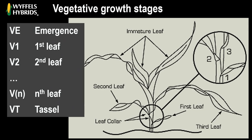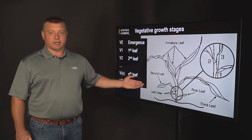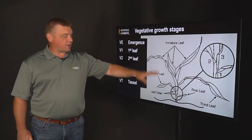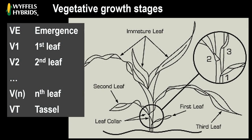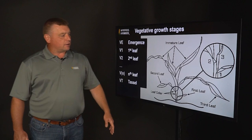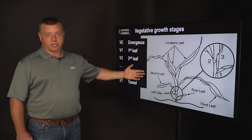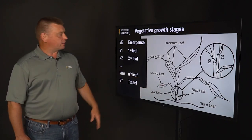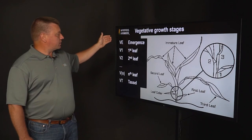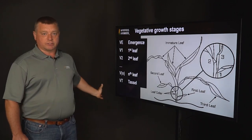The first stage or part of a corn plant's life cycle is called the vegetative stage. The vegetative stage is denoted by leaf growth primarily, and we use the leaf collar staging method at Wiffles, where we count the number of leaf collars to denote that growth stage. A leaf collar is defined as where a leaf blade connects to the corn stalk — there's a distinctive line, and that is the leaf collar. The vegetative growth stages go from V emergence all the way to tassel emergence.